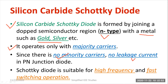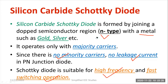Therefore, no leakage current will be generated in this junction. The advantage of no leakage current means the power loss will be minimized. That's the main advantage of silicon carbide Schottky diode. The main advantages are suitability for high frequency and fast switching operation. These are the basic features of silicon carbide Schottky diode.